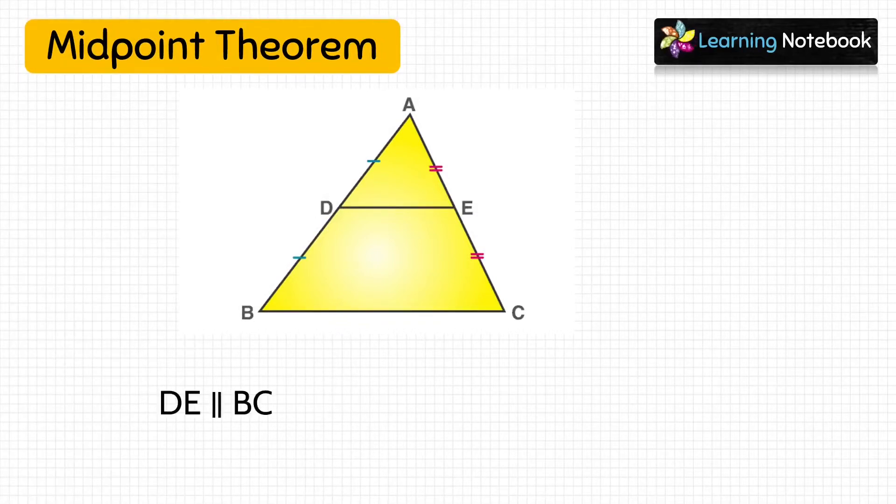So according to this midpoint theorem, line segment DE is parallel to third side of triangle BC, and DE is also equals to half of BC.